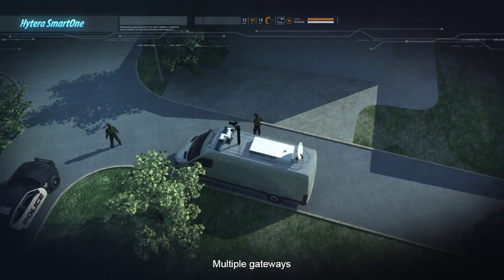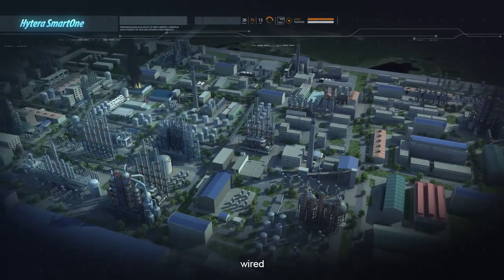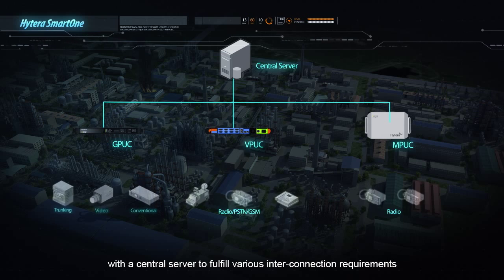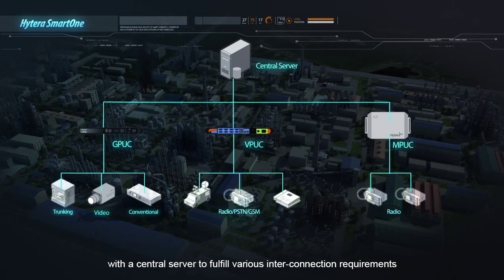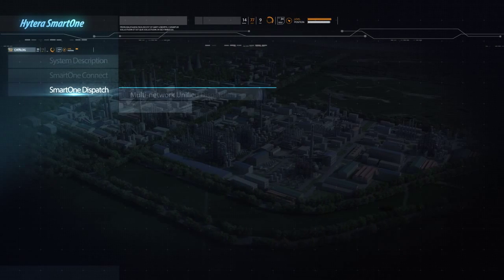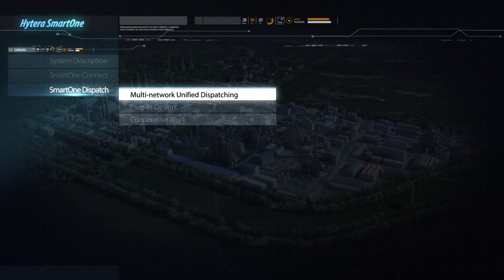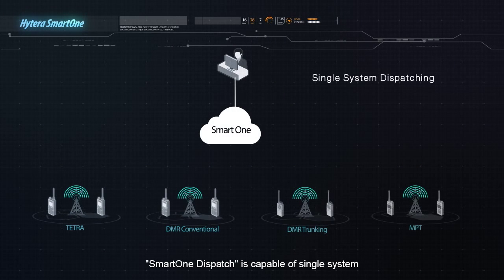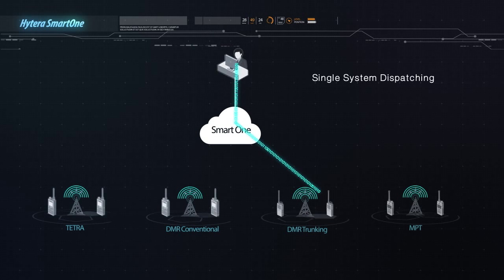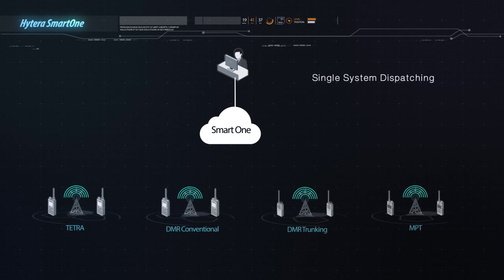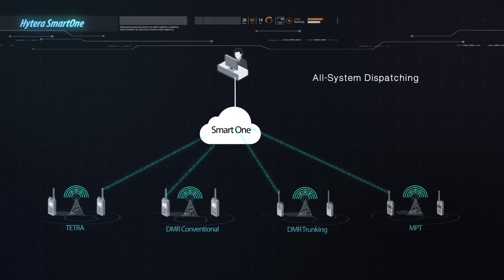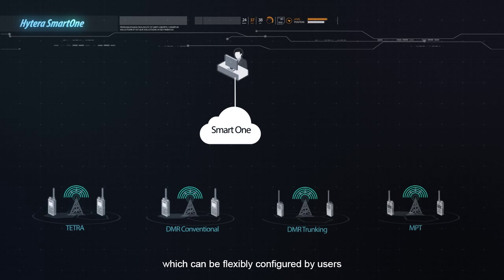Multiple gateways, including wireless and vehicle-mounted gateways, can be used together in one solution with a central server to fulfill various requirements. SmartOne Dispatch is capable of single system, multi-system, and all-system dispatching, which can be flexibly configured by users.